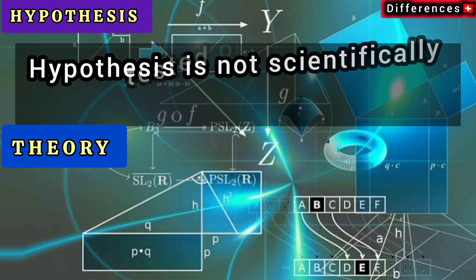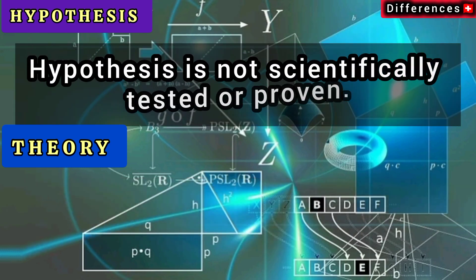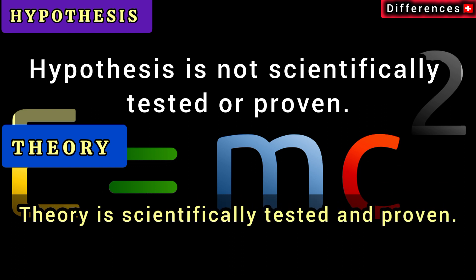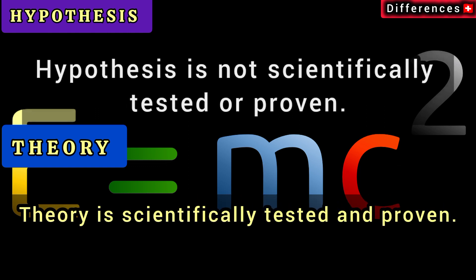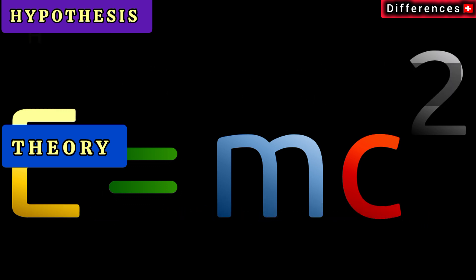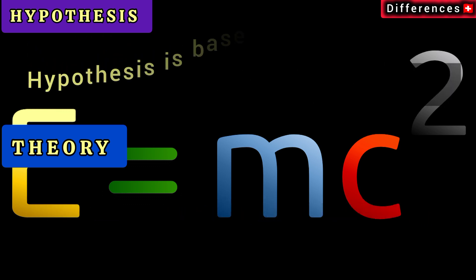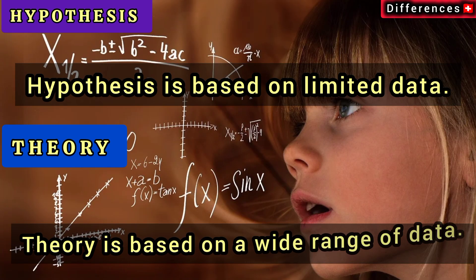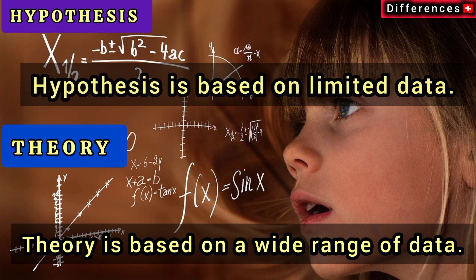A hypothesis is not scientifically tested or proven, while a theory is scientifically tested and proven. A hypothesis is based on limited data, whereas a theory is based on a wide range of data.